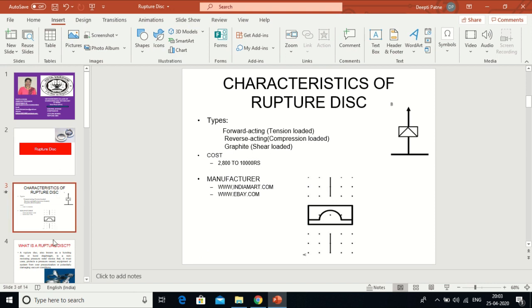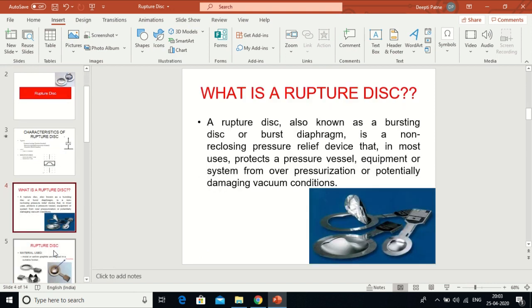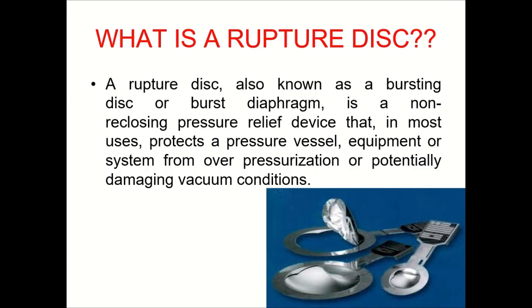Now let's see what a rupture disk is. A rupture disk is a self-destructing device — a device which can rupture itself in order to save the components and ultimately save the plant. I always describe this device as a 'kurbani dene wala device' — one that sacrifices itself in the plant to save the plant. That is a rupture disk.